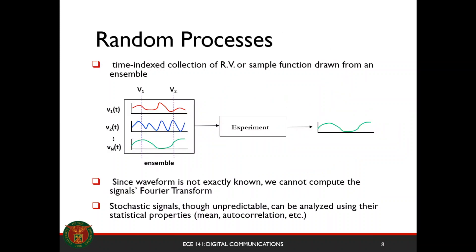Random processes are a time-indexed collection of random variables. If we take a snapshot of a random process in time, say V1, it has a certain distribution. If it's Gaussian, it's defined by a Gaussian function. Since we don't know the actual form of the wave, we cannot compute its Fourier transform, and they are generally unpredictable. But we can analyze them using their statistical properties.